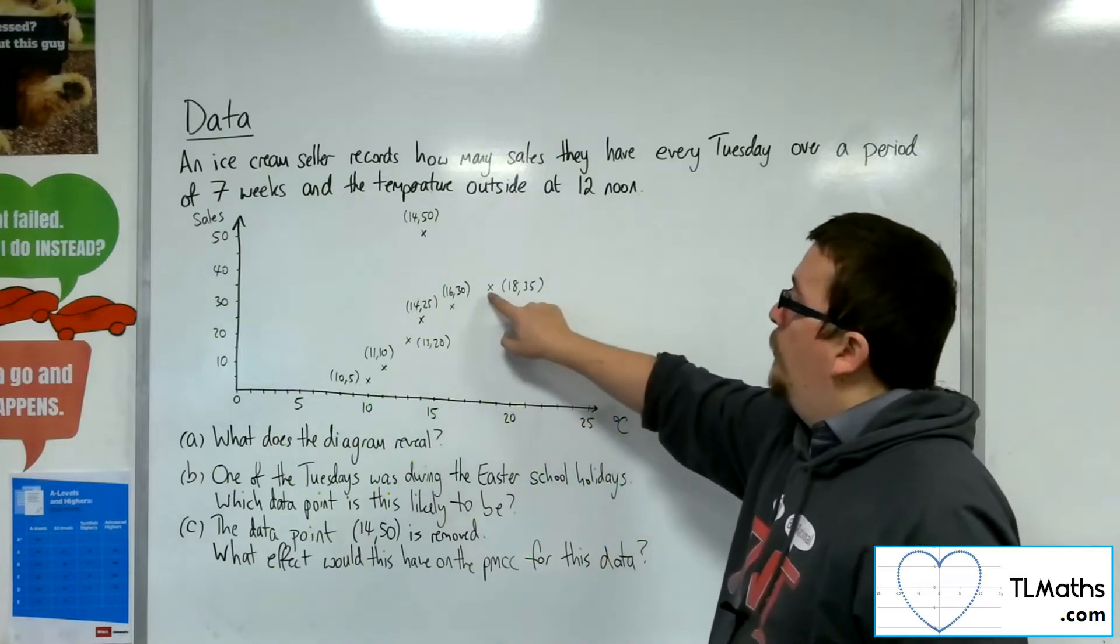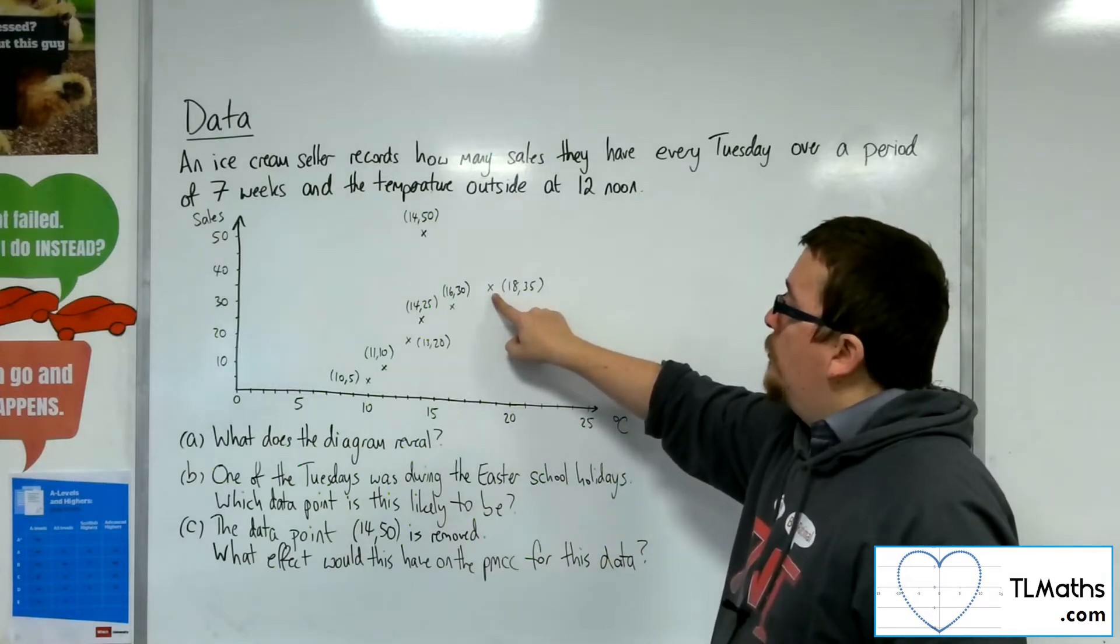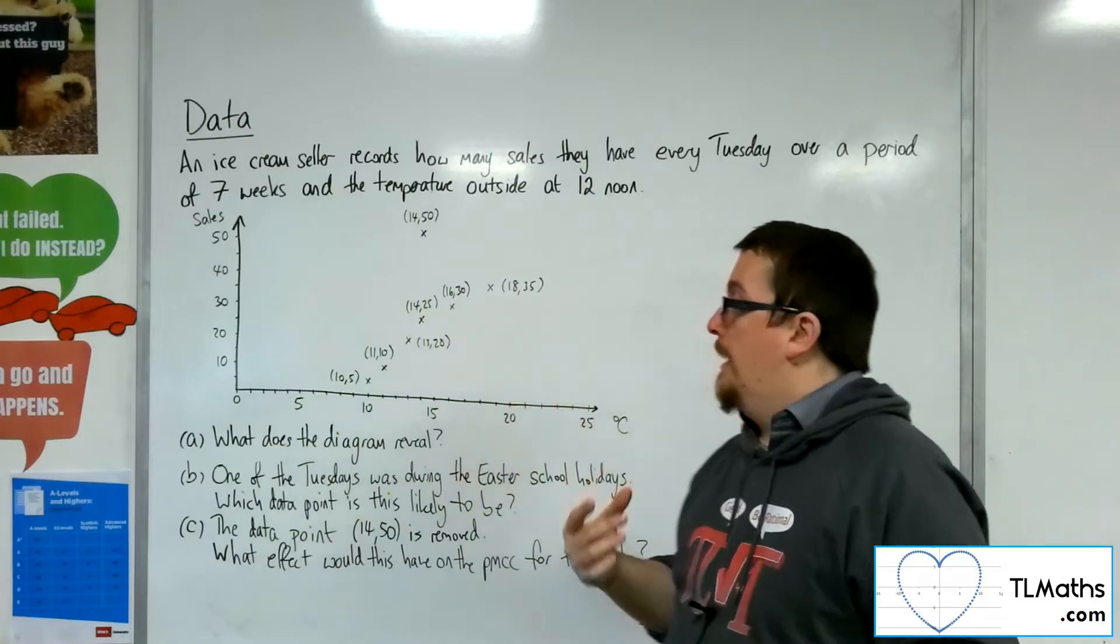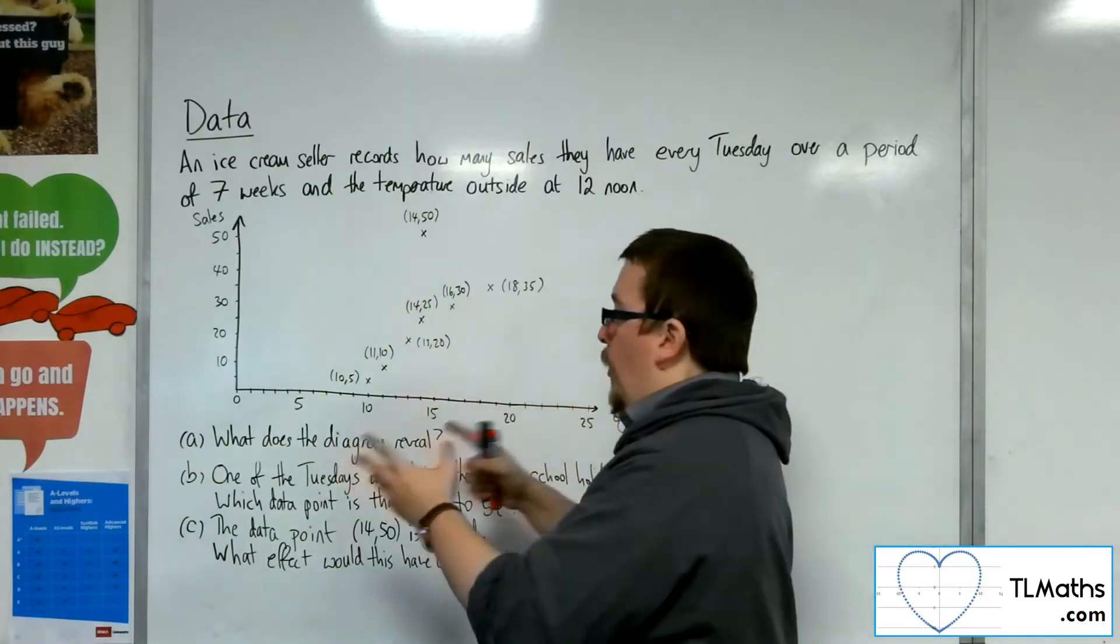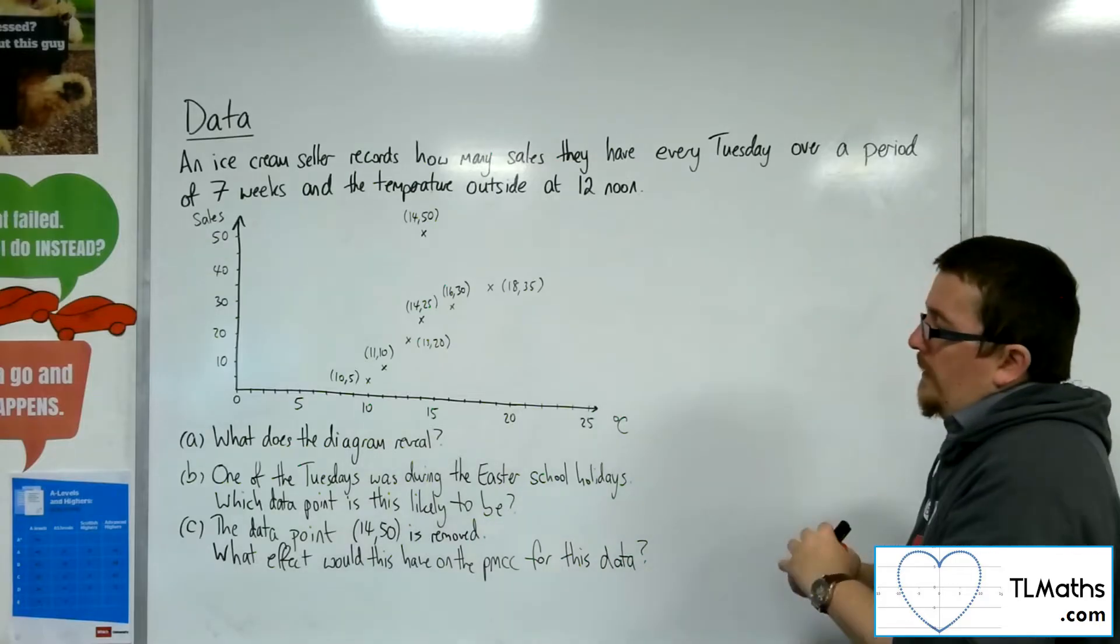Just for clarity, I've said precisely what values they are. So here we've got this one, it was 18 degrees centigrade, and there were 35 sales. Okay, so first of all, what does the diagram reveal?